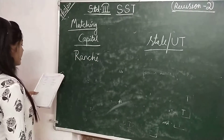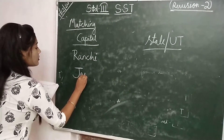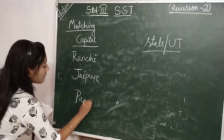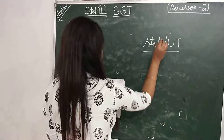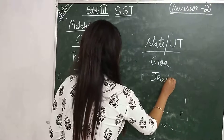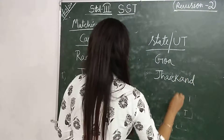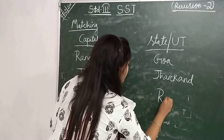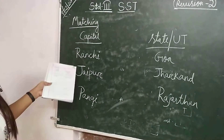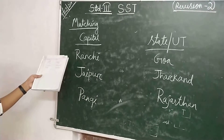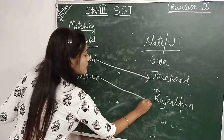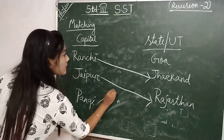Ranchi, R-A-N-C-H-I; Jaipur; then Panaji. State: Goa, Jharkhand, Rajasthan. We will match the capital with the State or Union Territories. Ranchi is Jharkhand, Jaipur is Rajasthan, Panaji is Goa.